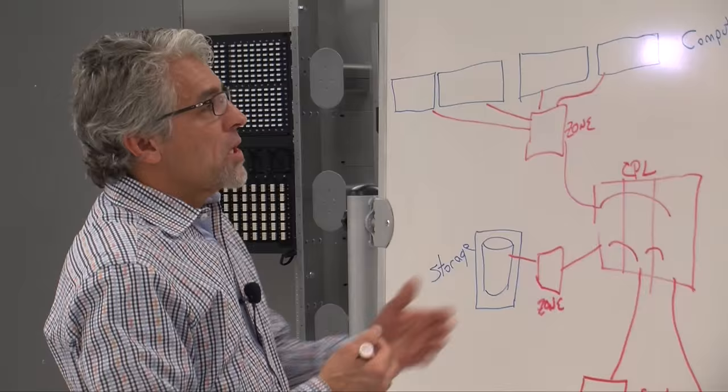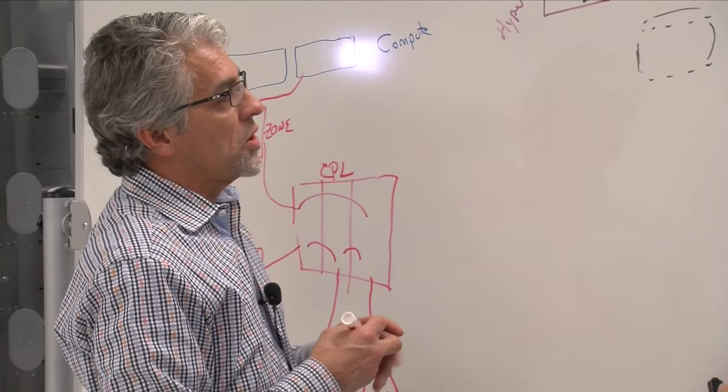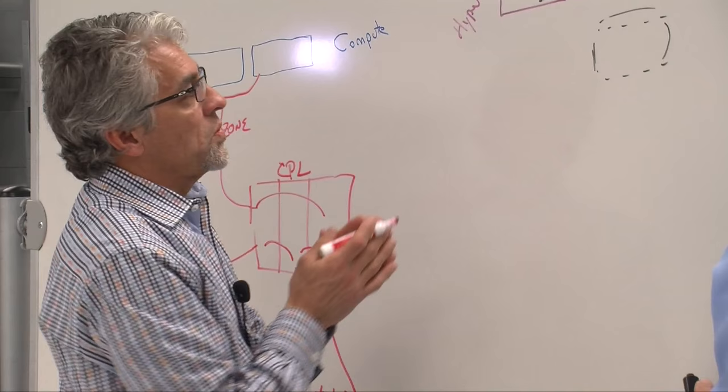So talk us through how we would wire this up. So the hyper-converged, when you have your nodes with your compute as well as your storage, there are going to be 10 gig fiber connections. And those connections need to talk ultimately to the core switch.